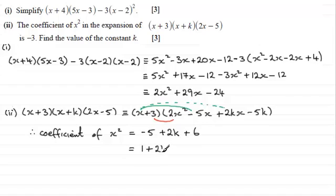Now we're told that this is equal to minus 3. So therefore, what we've got is 1 plus 2k must be equal to minus 3. So if we subtract 1 from both sides, we end up with 2k equaling minus 3 minus another one, which is minus 4. And from here, if I divide both sides by 2, you end up with k equaling minus 4 divided by 2, which is minus 2. And there you go.